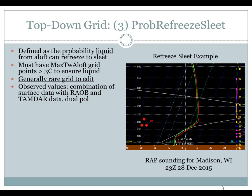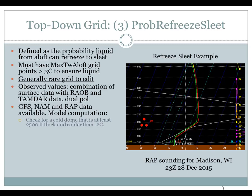Observed values include surface data with RAOB or TAMDAR — you'd probably have to look at both. With dual-pol radar, you may see a signature — a double ring reflecting your refreeze to sleet. GFS, NAM, and RAP data are available as well. For the model computation, the first part is checking for a cold dome at least 2,500 feet thick and colder than minus 2°C. Research shows that if it's warmer than that, you'll end up with just liquid and won't be able to refreeze. The probabilities for refreeze increase quickly as temperature in the cold dome decreases — from 10% at minus 4°C to 100% at minus 8°C, so it's quite sensitive.